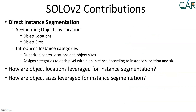To summarize, the SOLO V2 paper has two contributions. The first improves instance segmentation by introducing a direct method based on the locations and sizes of objects in the image. The second contribution is Matrix NMS, an improved non-maximal suppression method. The key question is how object locations and sizes are used for instance segmentation, which will be studied in the next slides.